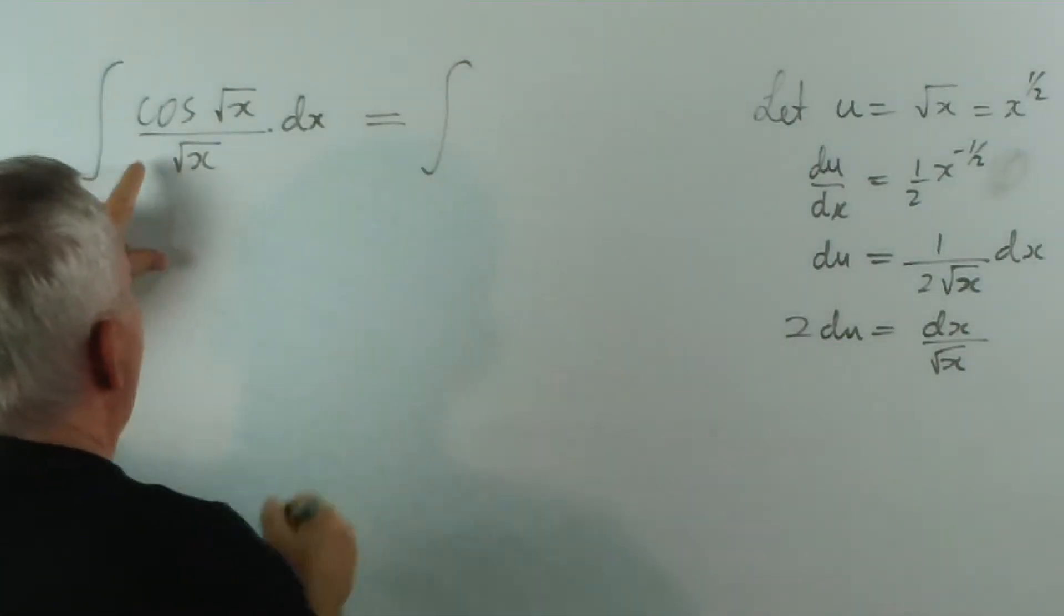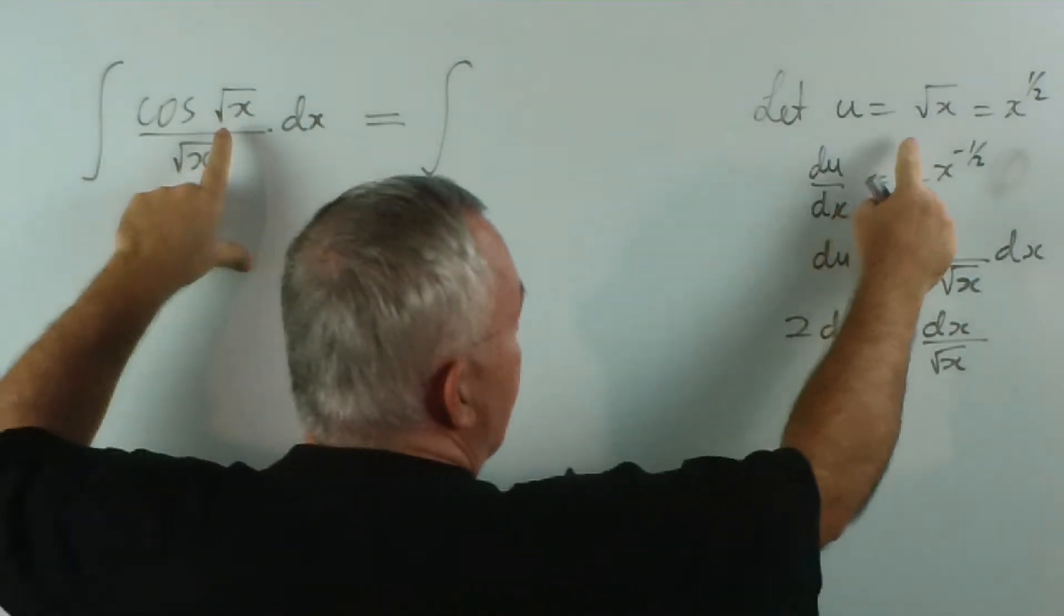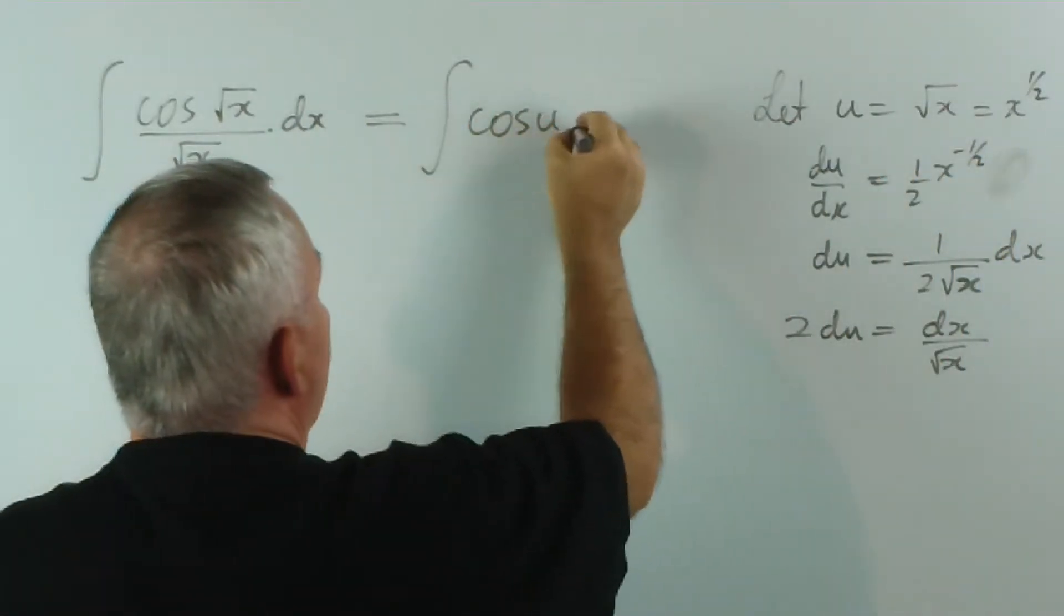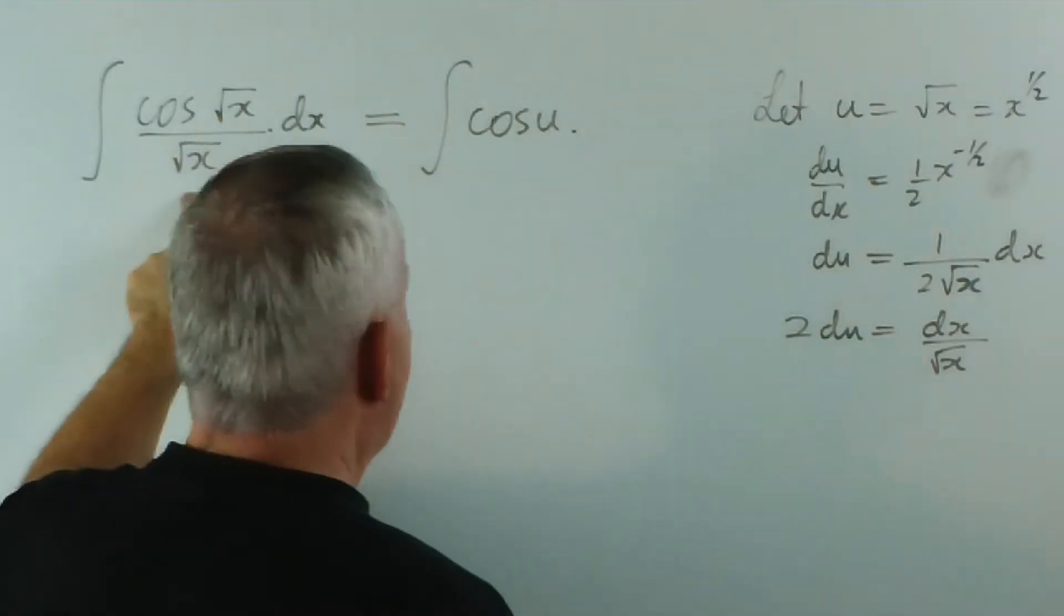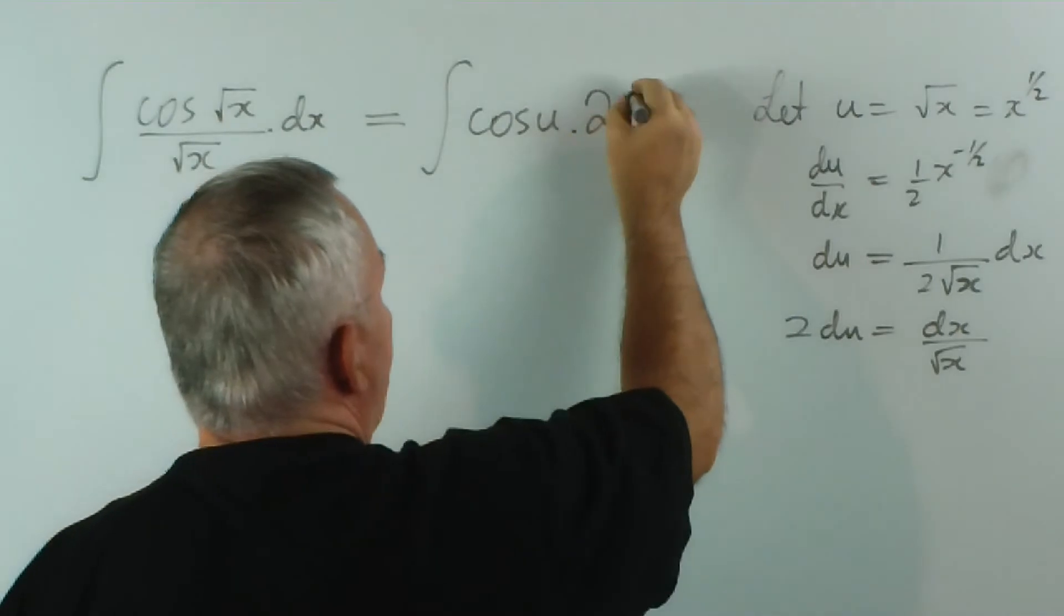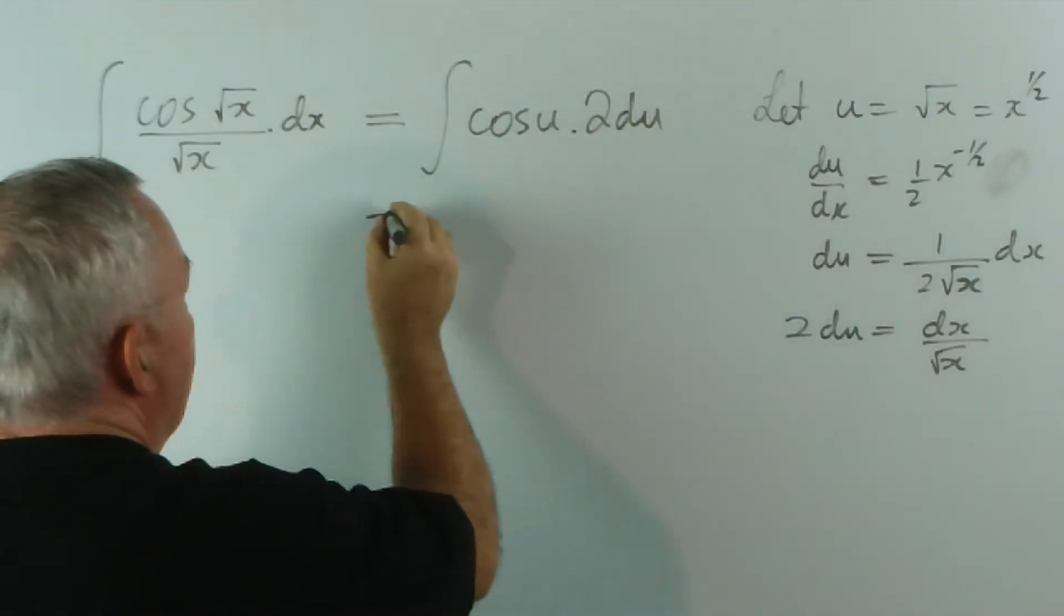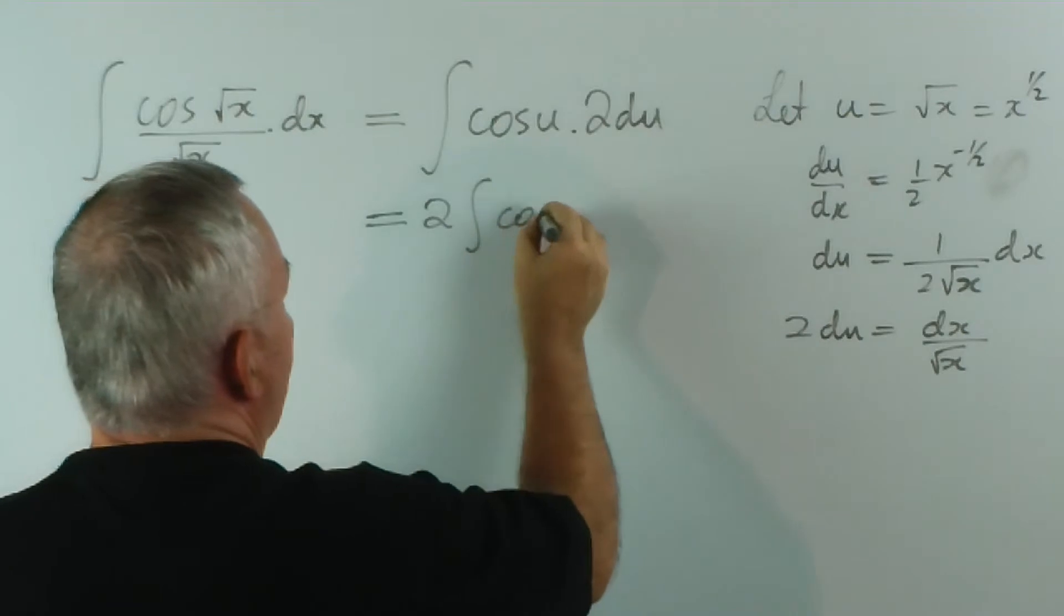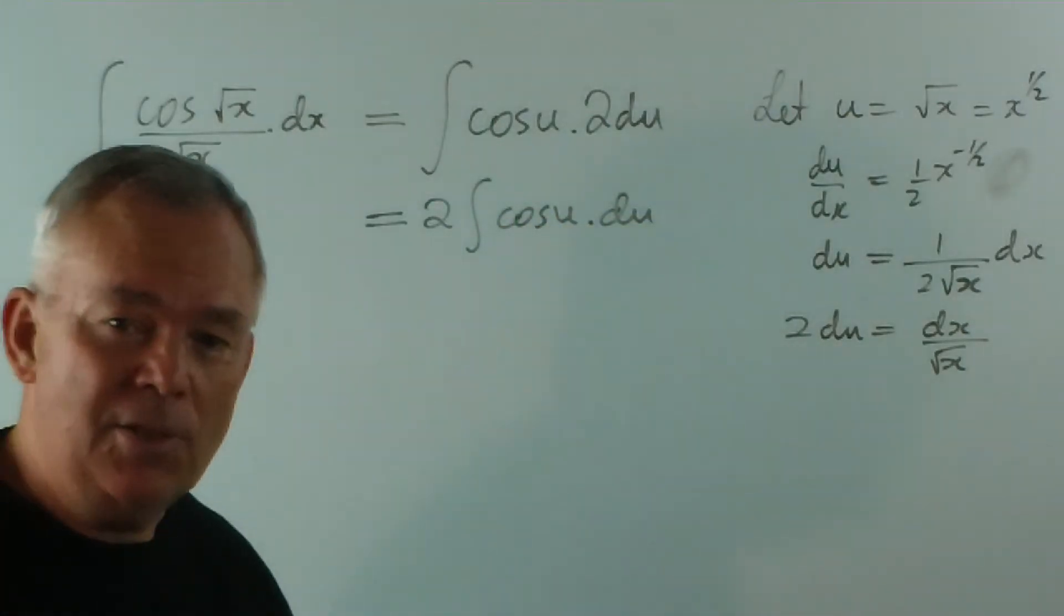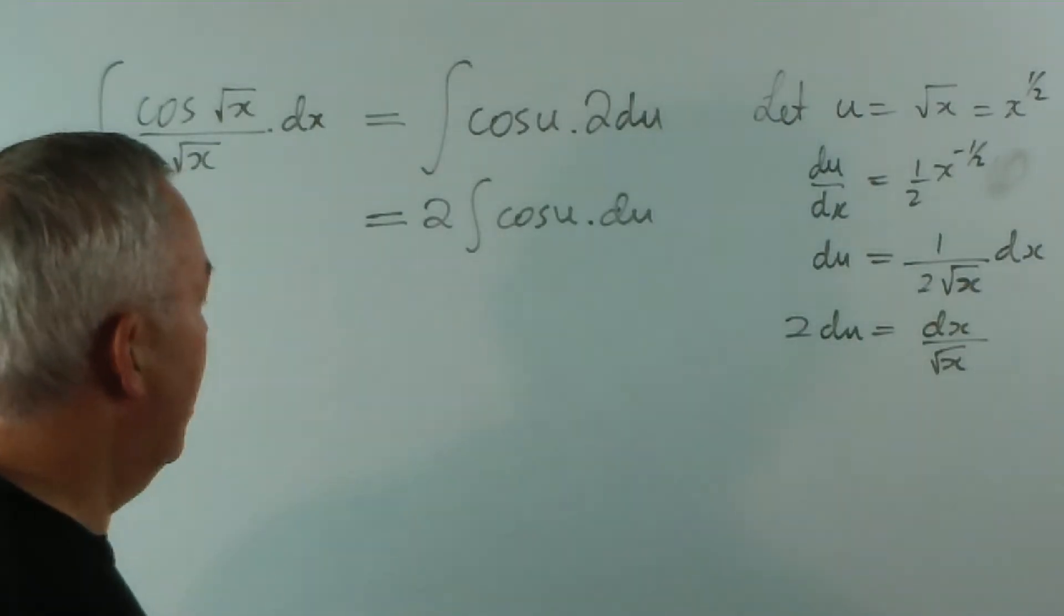We have the integral cosine of root x. Root x is u, so it's cos u times dx over root x, turns out to be 2 du, which equals 2 integral cos u du. Surprisingly simple, considering what we thought we had.